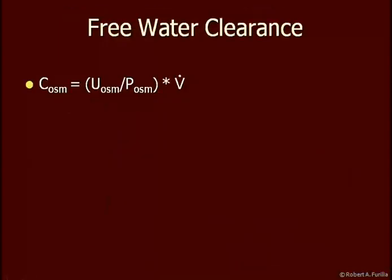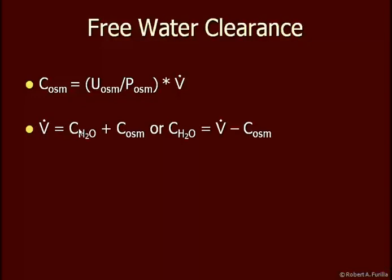We talked about the clearance of an individual particle — it could be glucose, it could be inulin. What we're going to talk about now is the clearance of all osmolytes. The clearance of all osmolytes equals the urine concentration of all osmolytes divided by the plasma concentration of all osmolytes times urine flow. This is our standard clearance equation. Urine flow must equal the clearance of water plus the clearance of the osmolytes, since urine contains both water and osmolytes.